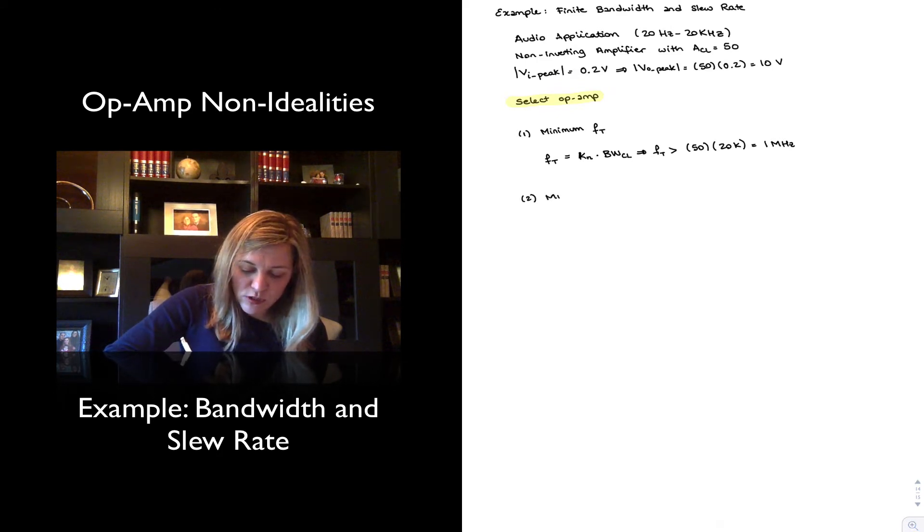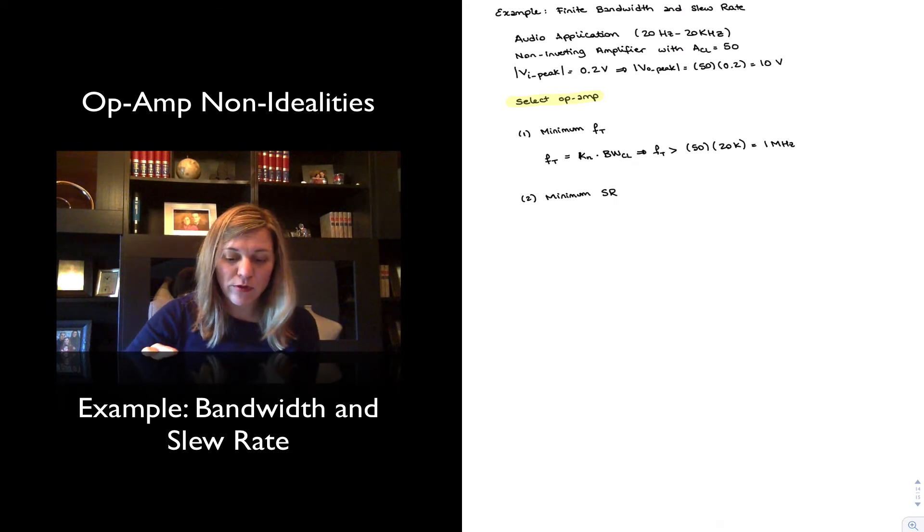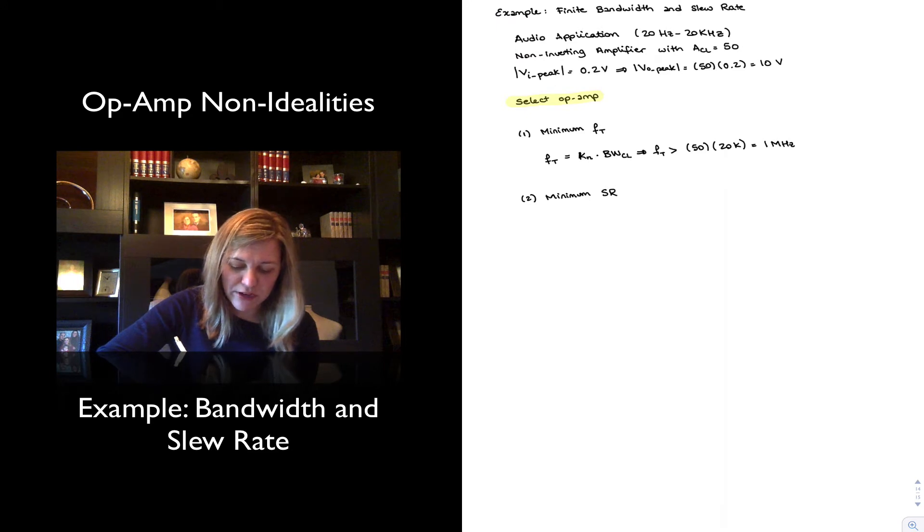Second, I need to figure out what's the minimum value of my slew rate. Now, obviously, I want my slew rate limiting frequency, or full power bandwidth, same thing, to be greater than 20 kilohertz, because I want to avoid the slew rate effects in my output of the amplifier.